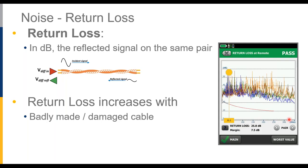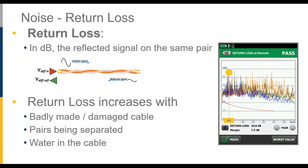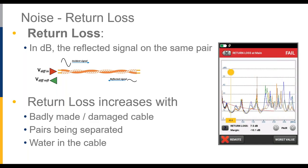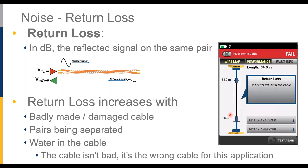Damaged cable can show up clearly in return loss results — you can see where the cable went into modular furniture or was lashed down to the legs of a machine. We want to maintain the physical position of the two conductors in each pair; separating them causes an impedance variation, which causes reflection. Getting water in the cable is a notable industrial case — return loss will look unusual, indicating not necessarily a bad cable but the wrong cable for the application. That's the C in MICE for climatic, or the I for ingress — if you're getting water in, you need a more waterproof jacket.